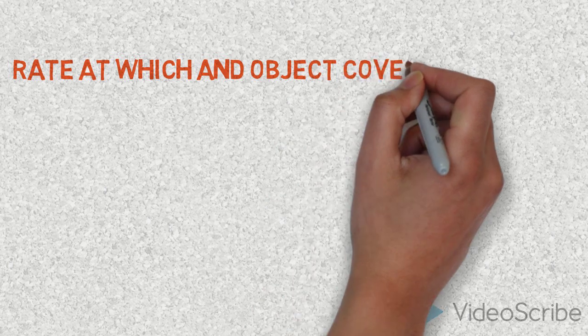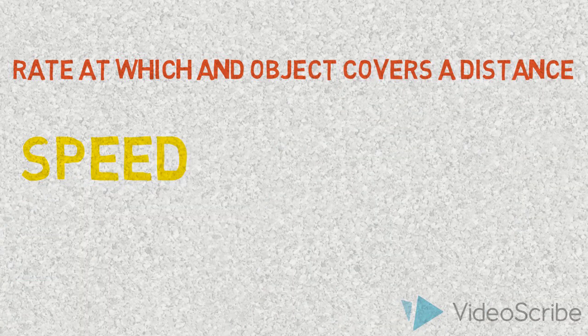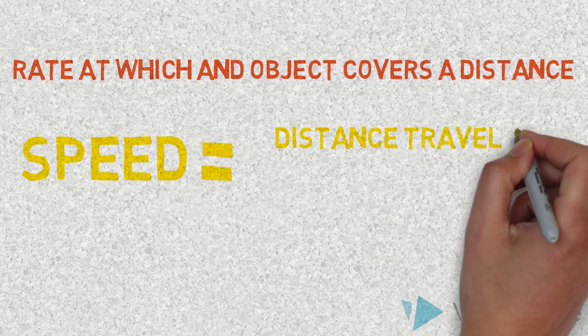Speed can be thought of as the rate at which an object covers a distance. The average speed is defined as distance traveled over time of travel.